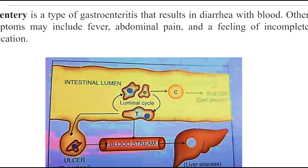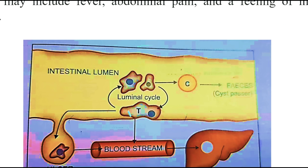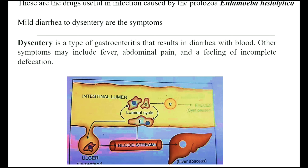This is our amoeba. This is the trophozoite form. It will convert into the trophozoite, and this will form cysts or it will be infected through the fecal-oral route. The trophozoite form will produce GI ulcers. It will be infected via the bloodstream and reach the liver. The cysts are then passed through the rectal route.